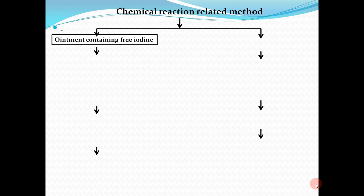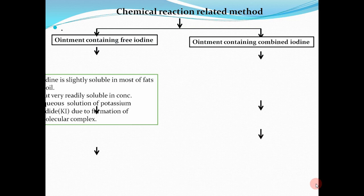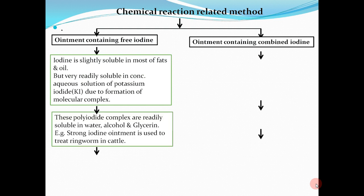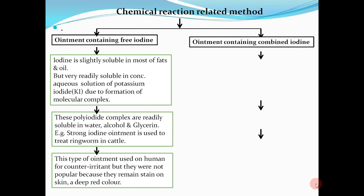The chemical reaction related method is categorized into two parts: ointments containing free iodine and ointments containing combined iodine. Iodine is slightly soluble in most fats and oils but very readily soluble in concentrated aqueous solution of potassium iodide (KI), due to formation of the molecular complex KI₃. These polyiodide complexes are readily soluble in water, alcohol, and glycerin. An example is strong iodine ointment, used to treat ringworm in cattle and as a counter-irritant in humans, but it is not popular because it leaves a deep red stain on the skin.